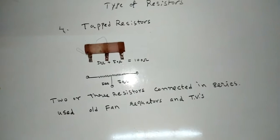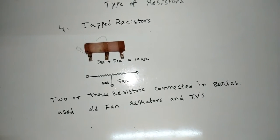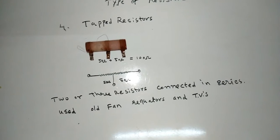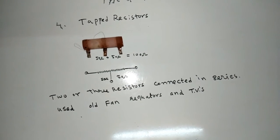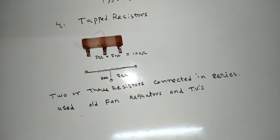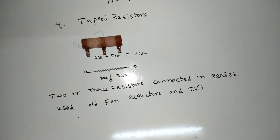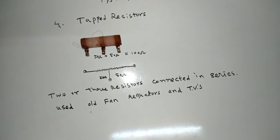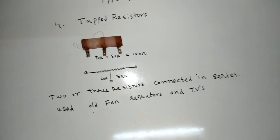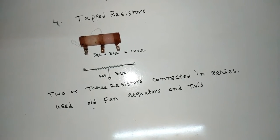Tapped Resistors. Two or three resistors connected in series. This type of tapped resistors used in old fan regulators and TVs to control fan speed.